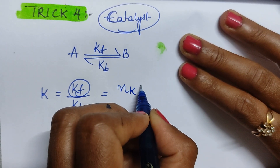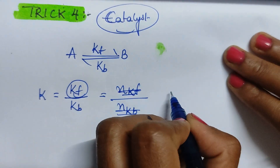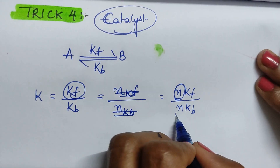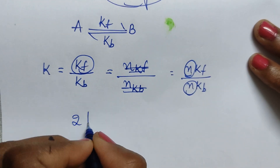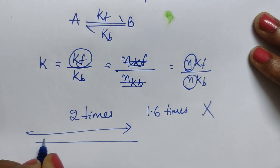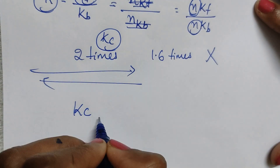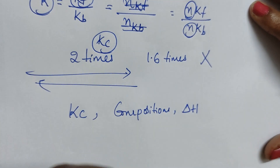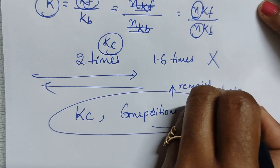When a catalyst is added, both the forward and backward rate constants increase by the same factor — n times Kf and n times Kb. So Kc remains constant. A common exam question asks whether forward reaction increased by 2 times and backward by 1.6 times is correct — no, it is wrong. Both must increase by equal times. Therefore, Kc remains constant, there is no change in composition, and there is no change in enthalpy.